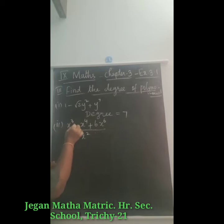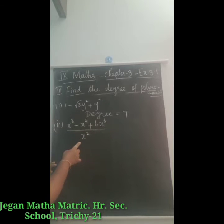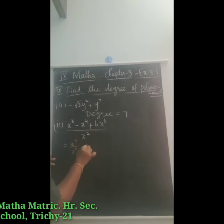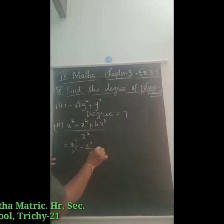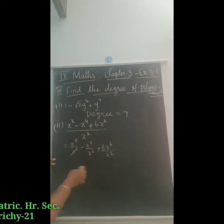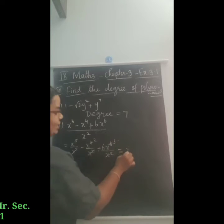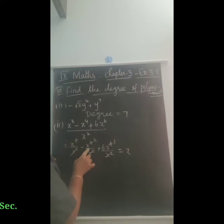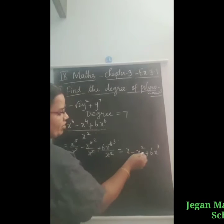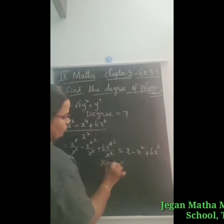Second question: x cubed minus x power 4 plus 6x power 6, divided by x squared. We divide each term: x cubed by x squared gives x power 1; x power 4 divided by x squared gives x squared; 6x power 6 divided by x squared gives 6x power 4. Wait — simplifying correctly: the result is x minus x squared plus 6x power 4. The highest power of the variable is 4, so the degree is equal to 4.